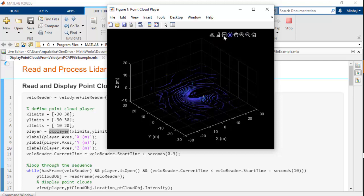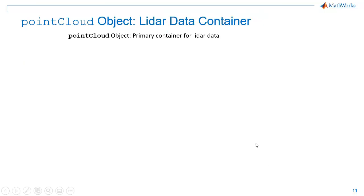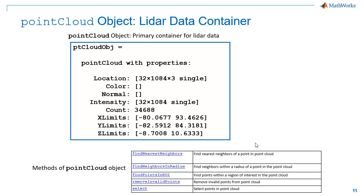To find details about any selected point in the point cloud, we can make use of the data tip feature. In MATLAB, point cloud data is stored as a point cloud object. It encloses all the properties associated with the point cloud such as location, intensity, color, count, XYZ limits, etc. On this point cloud, you can find nearest neighbors, find points in any specific region of interest, remove invalid points, and select any points using indices.